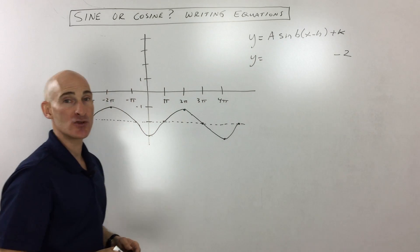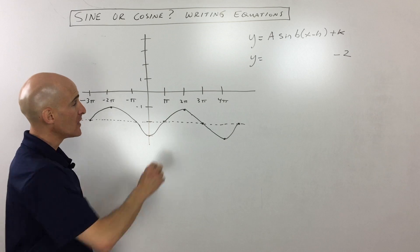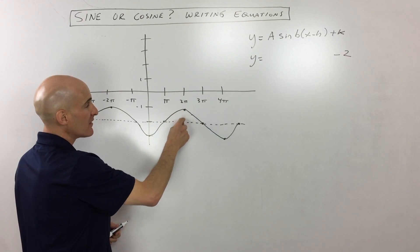Now, the next thing is the amplitude. And the amplitude is referring to how high the waves are. But remember, when you measure the amplitude, you're always measuring from this midline.